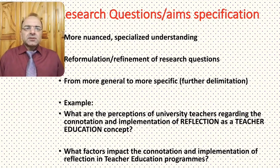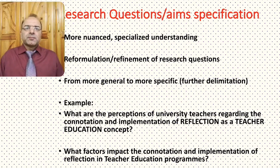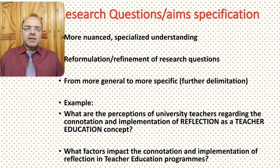What happens next is research questions and aims specification. This literature review, or the analysis of background knowledge, actually helps you in having a more nuanced, specialized understanding of the topic. Now you have more technical and expert knowledge related to the particular topic that you are exploring. This might lead to the reformulation or refinement of research questions, going from more general to more specific research questions and research objectives. That will help you in the further delimitation and specification of the research topic that you want to explore.